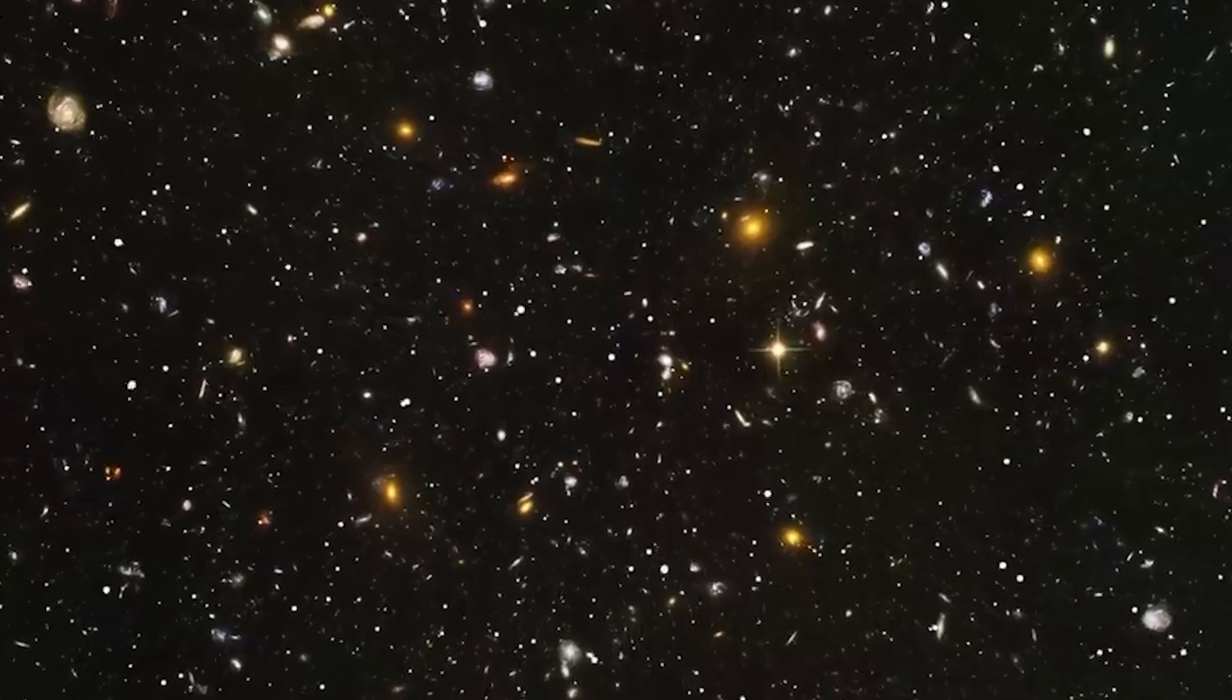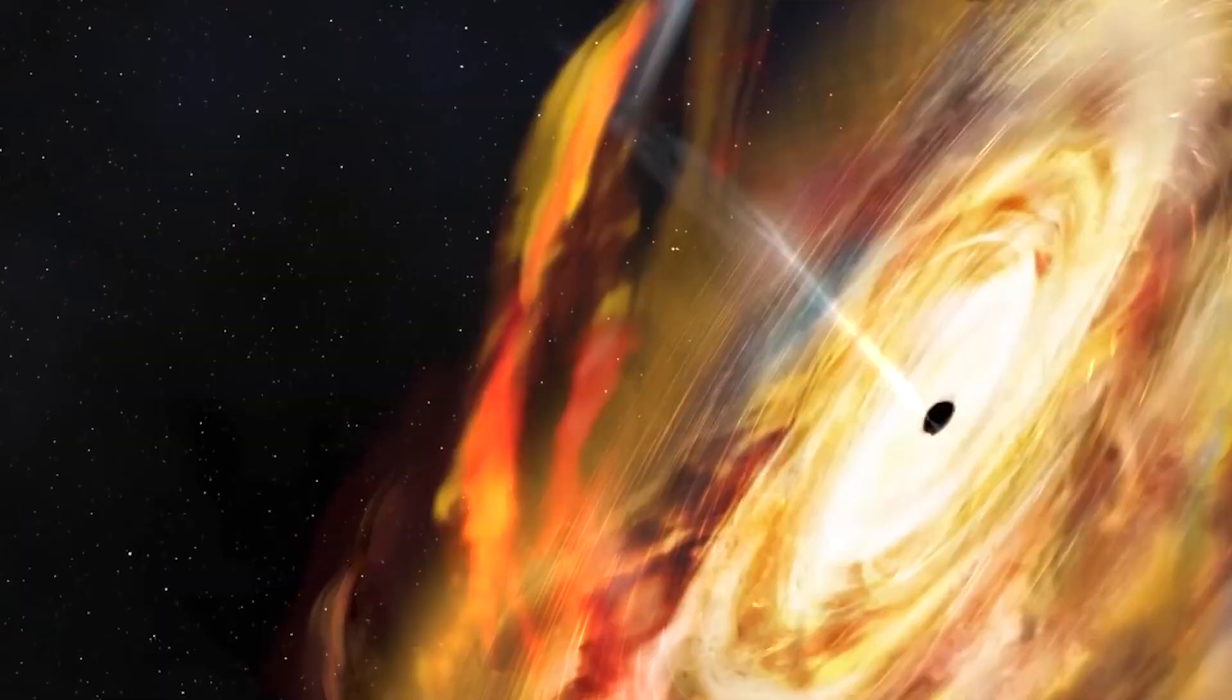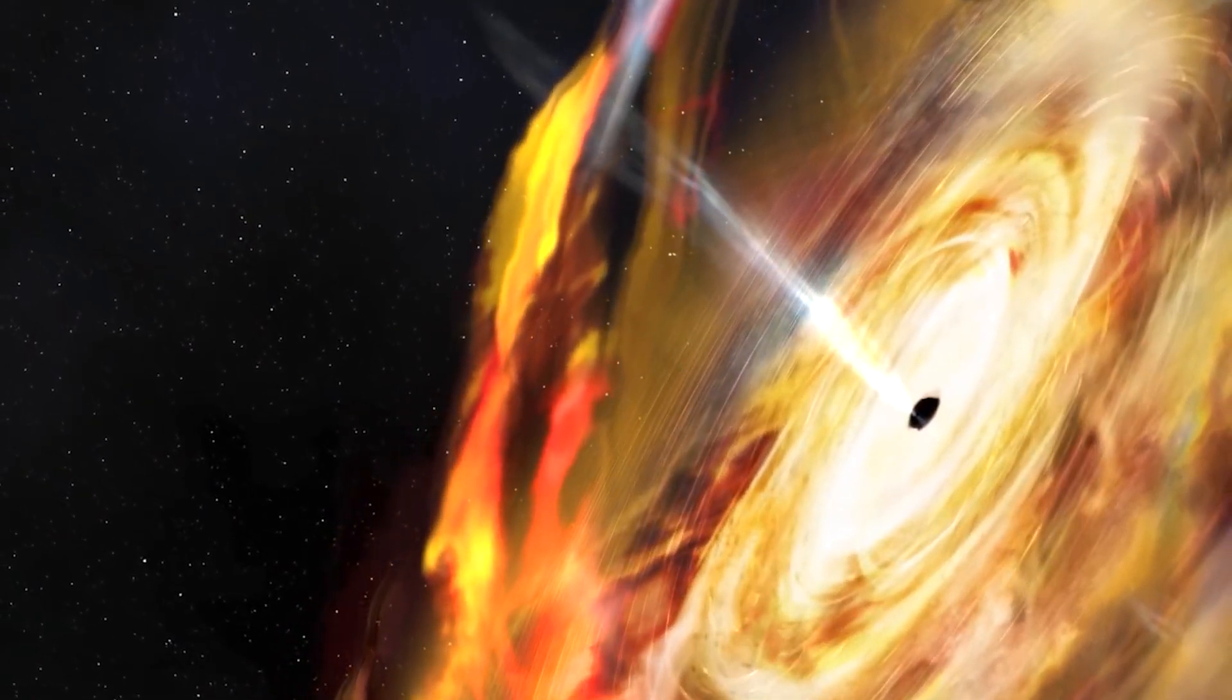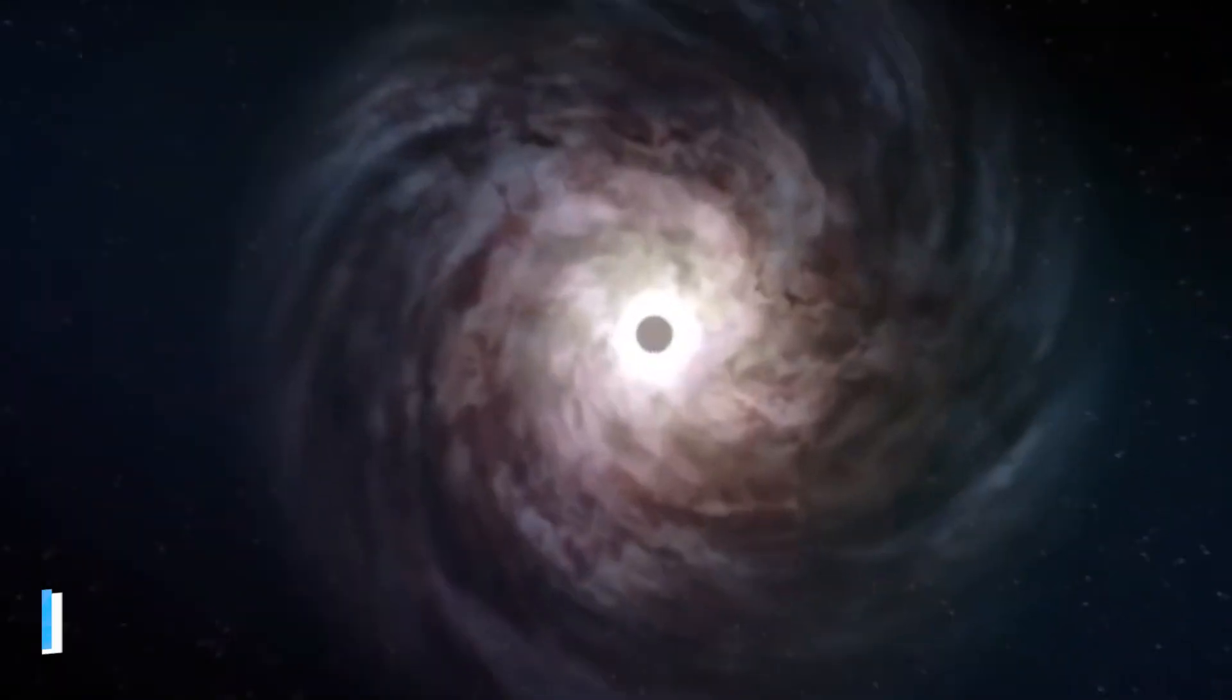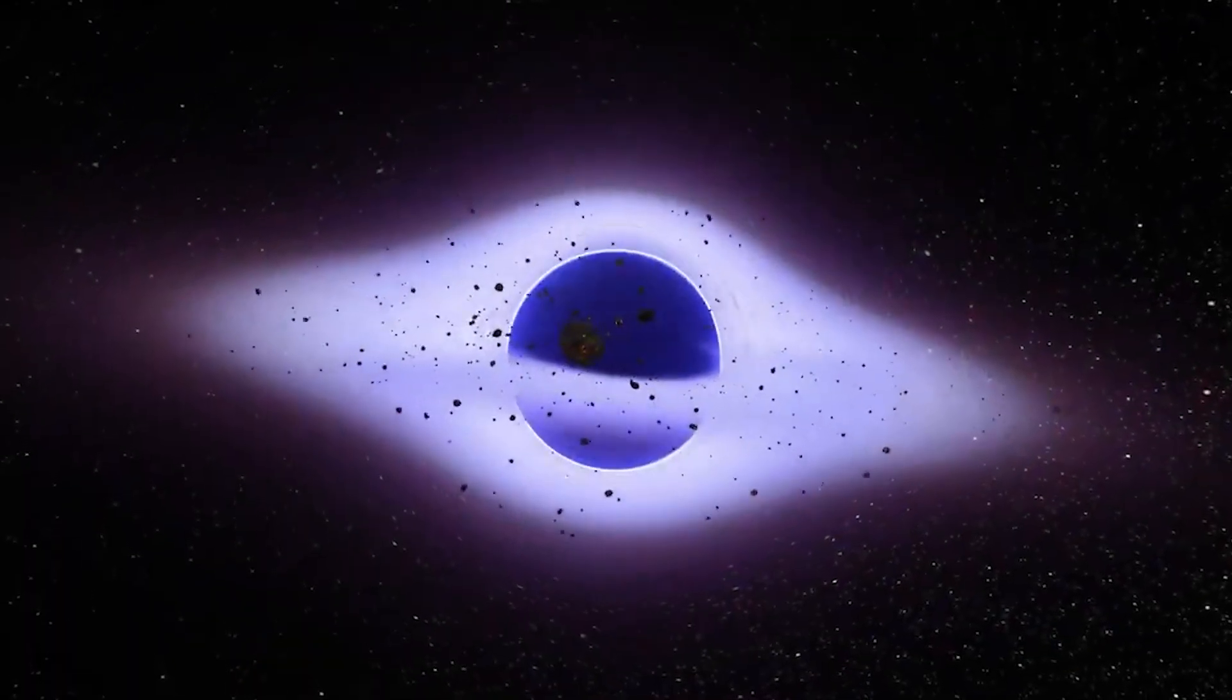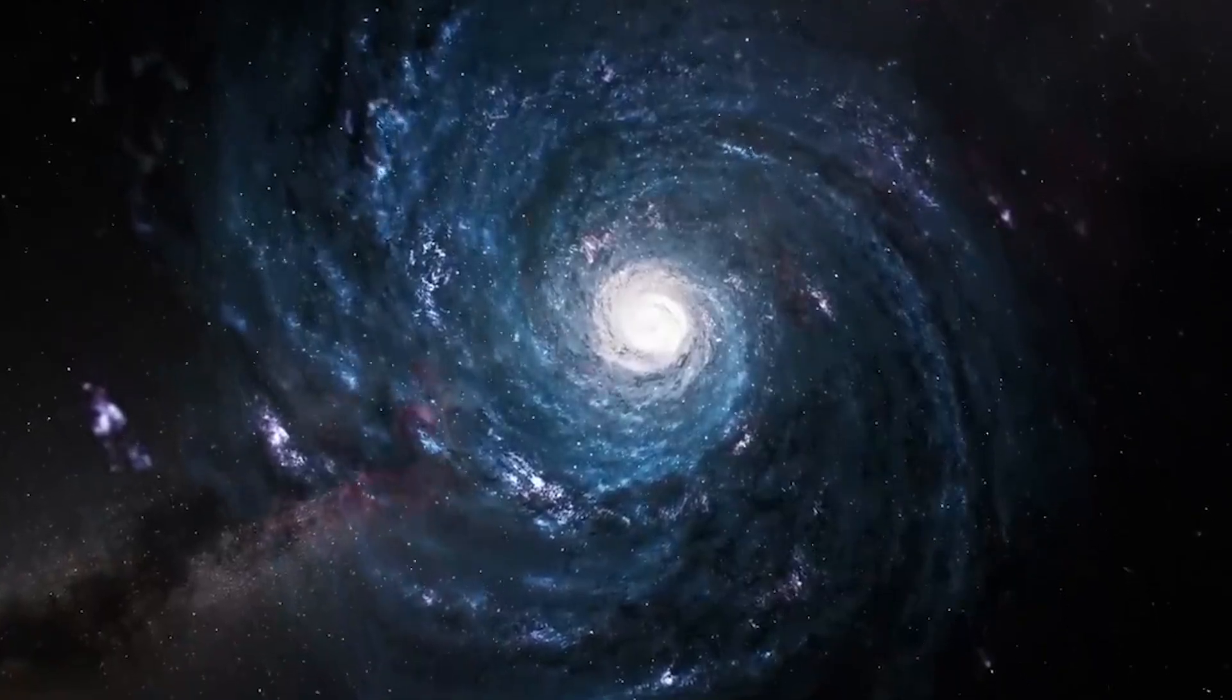But here's where things get even stranger. Inside one of these impossible galaxies, Webb found something that's making scientists scratch their heads even harder. A supermassive black hole, more than a billion times heavier than our sun, existing in a galaxy that formed when the universe was only 770 million years old. Think about that for a second. We're talking about a cosmic monster that, according to everything we know about physics, shouldn't have had time to grow that big.